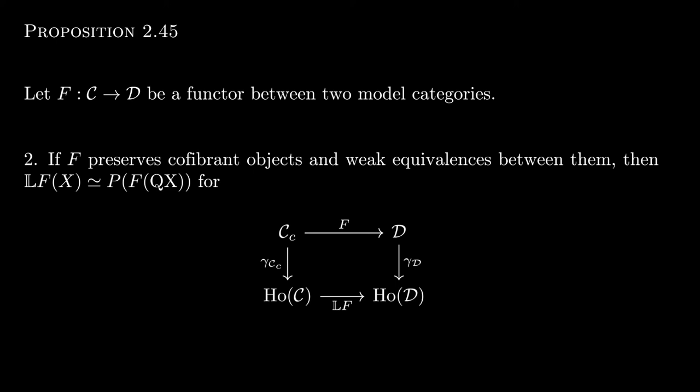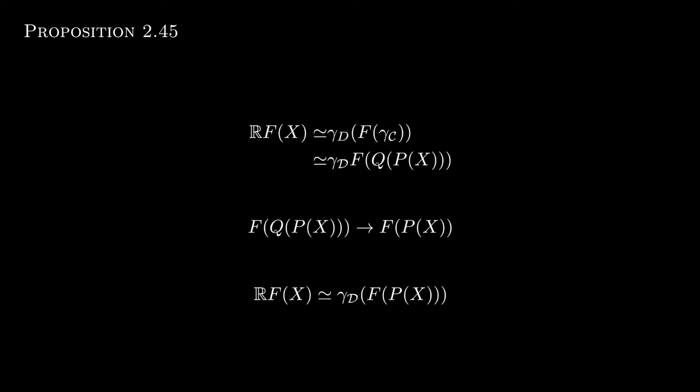We will prove the first statement; the other is dual. Let γ_C be the map from C to the homotopy category of C, and likewise γ_D. We can consider RF(x) as γ_D of F of γ_C, which gives a map from Ho(C) to Ho(D). By assumption, F is a homotopical functor on fibrant objects. The map from QP(x) to P(x): first, both are fibrant objects, and by construction the map is an acyclic fibration, so under F — which is a homotopical functor — the map F of QP(x) to F of P(x) is a weak equivalence, and so it is sent to an isomorphism under γ_D.